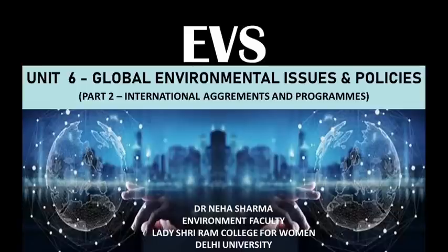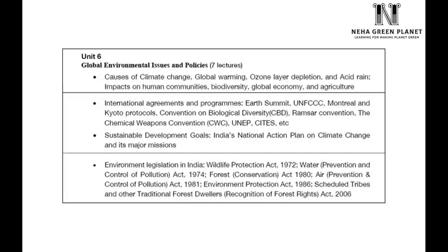Environmental studies, Unit 6: Global Environmental Issues and Policy, Part 2. In this chapter we will be discussing international agreements and programs. In the previous video we discussed climate change, global warming, ozone depletion, and acid rain. In this part we will cover the Earth Summit, UNFCCC, Montreal Protocol, Kyoto Protocol, Convention on Biodiversity, Ramsar Convention, Chemical Weapon Convention, UNEP, CITES, and the National Action Plan on Climate Change and its missions.